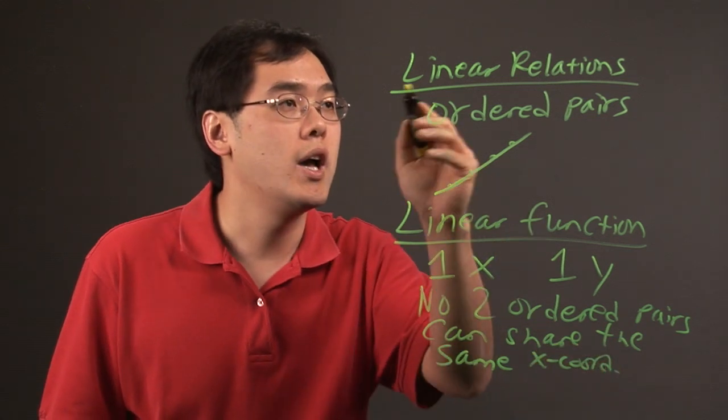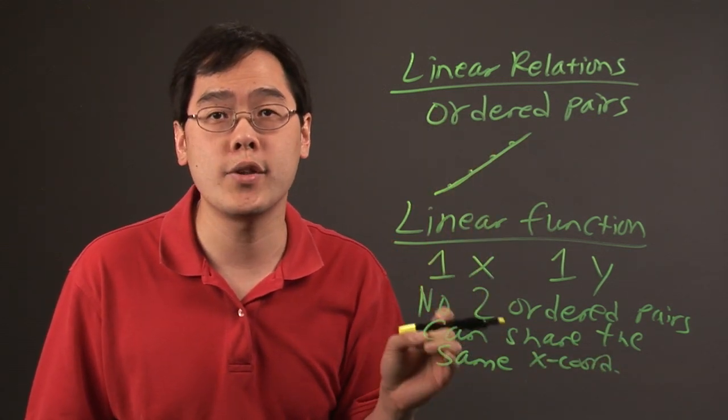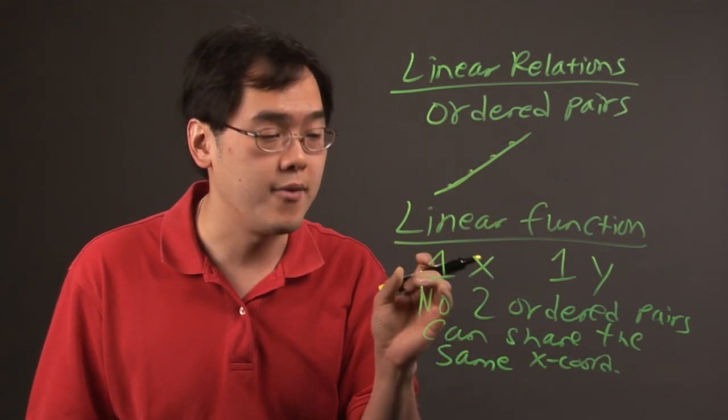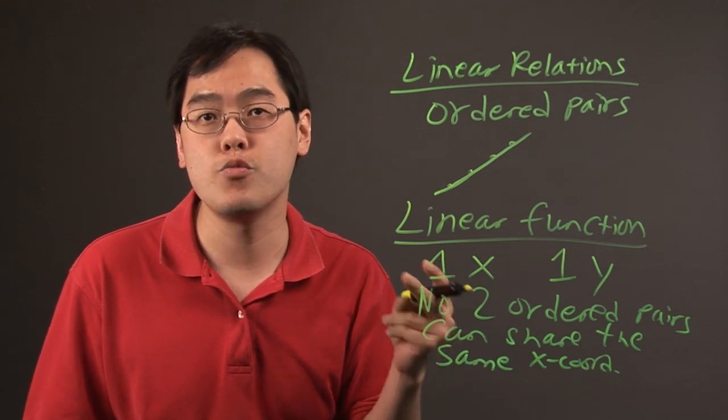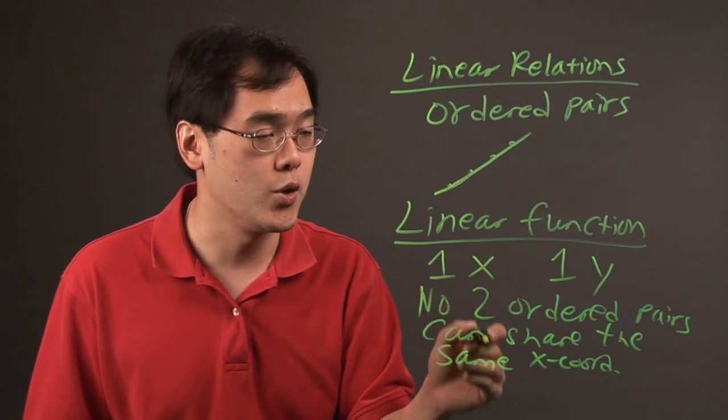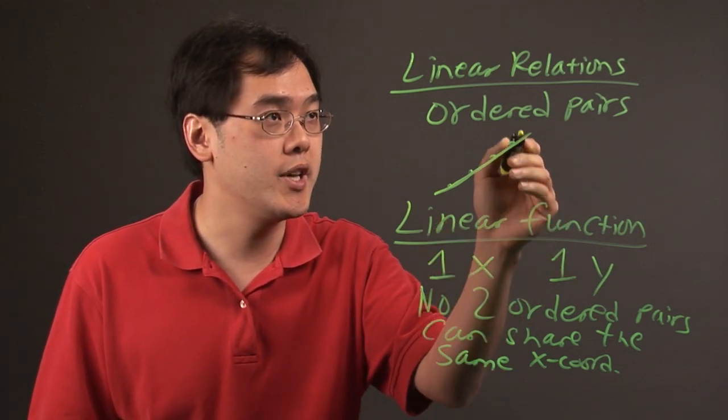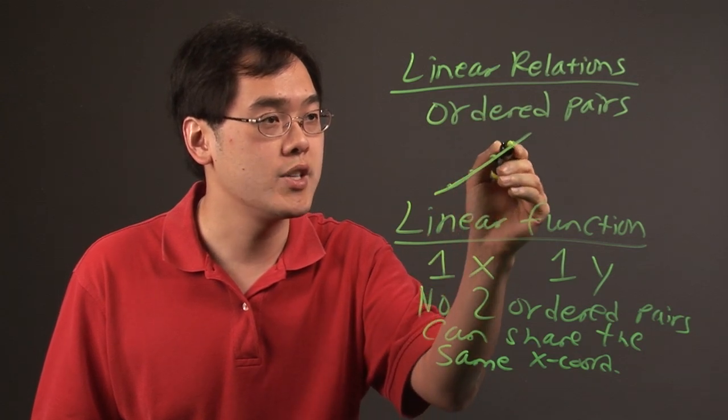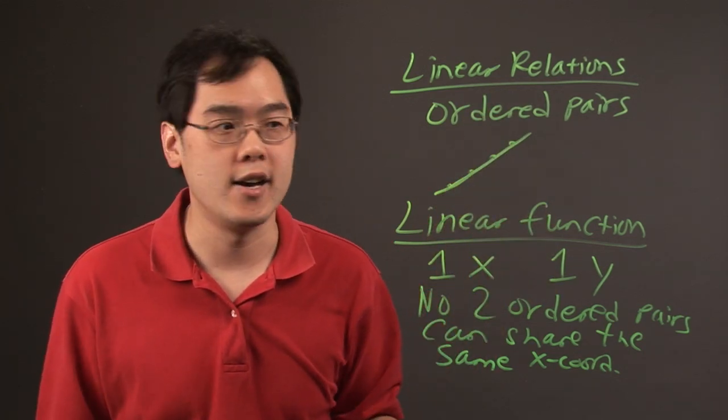So a linear relation can qualify to be a linear function if all the ordered pairs have different X coordinates and that no two pairs have the same X. And so a linear relation would be a bunch of ordered pairs and a linear function would be the line itself.